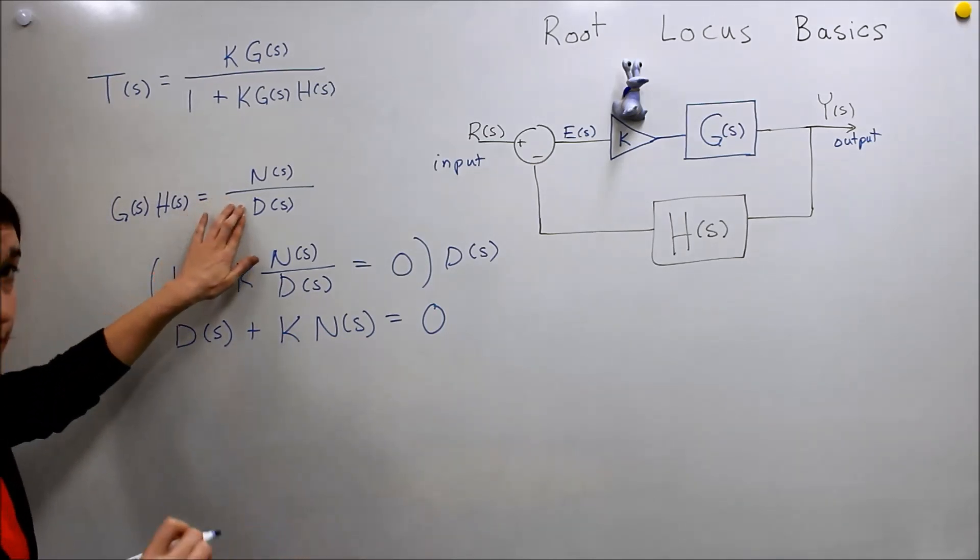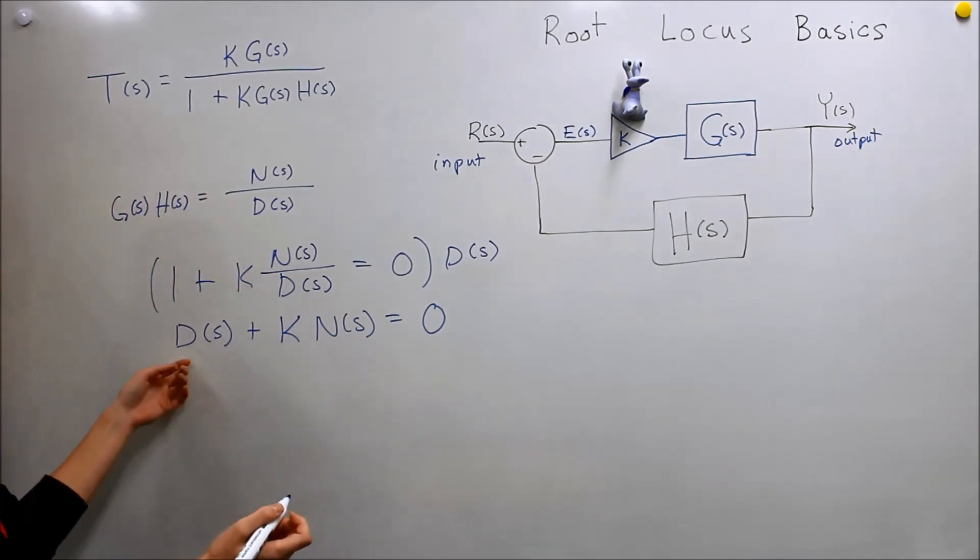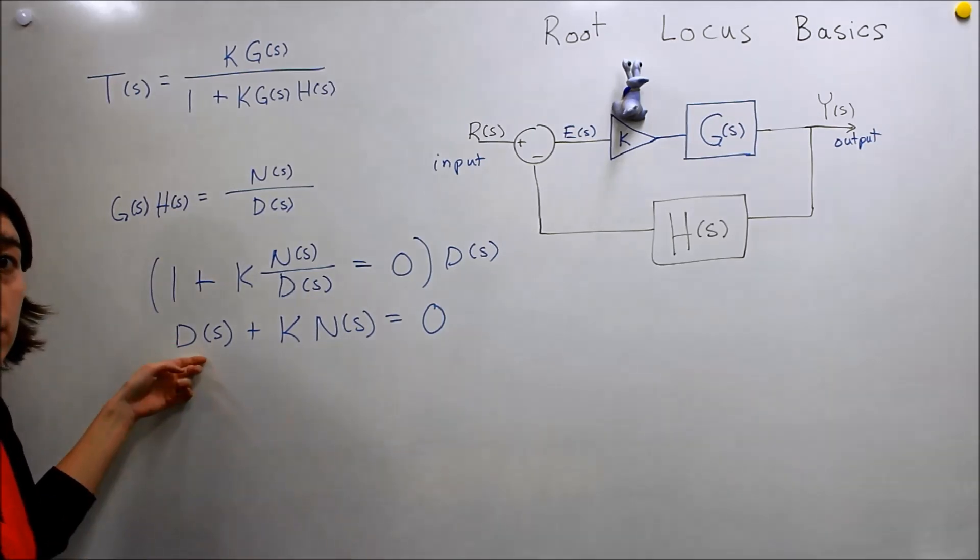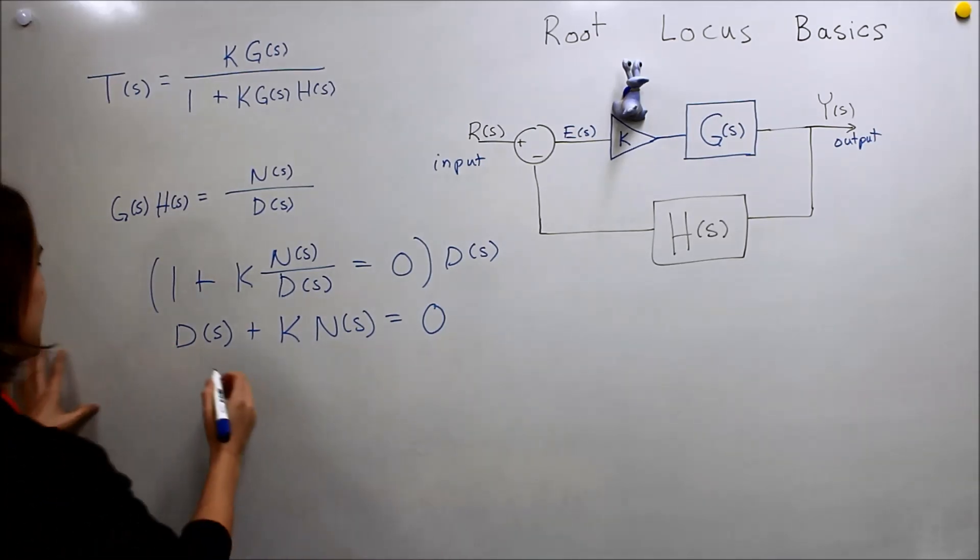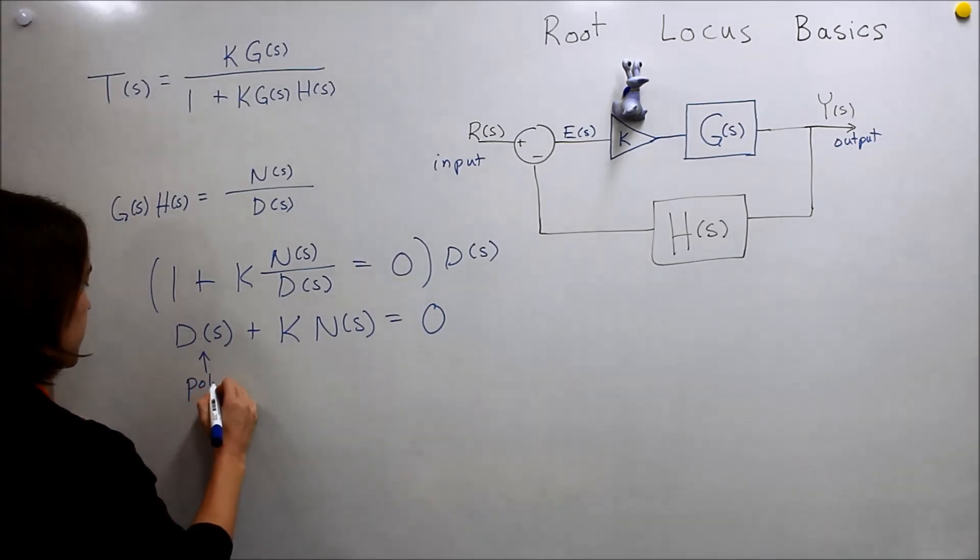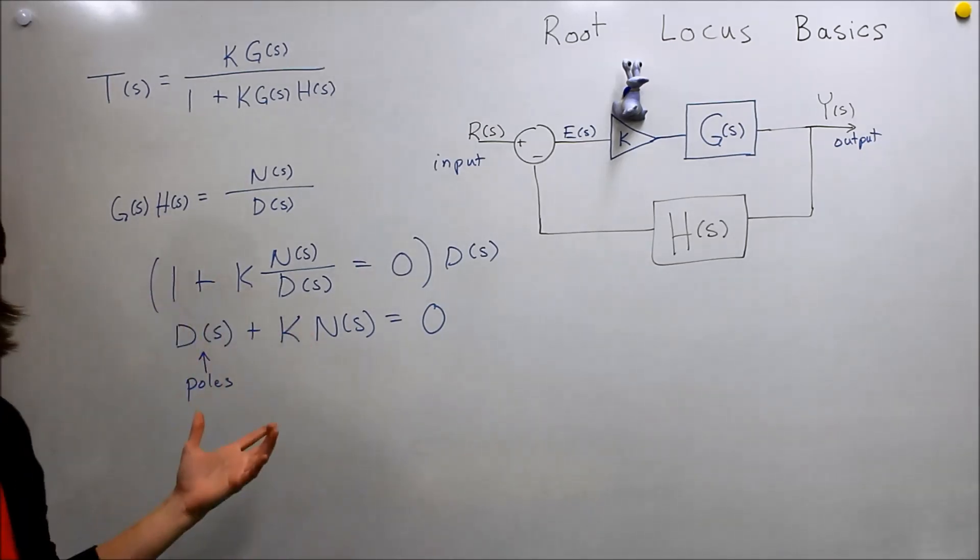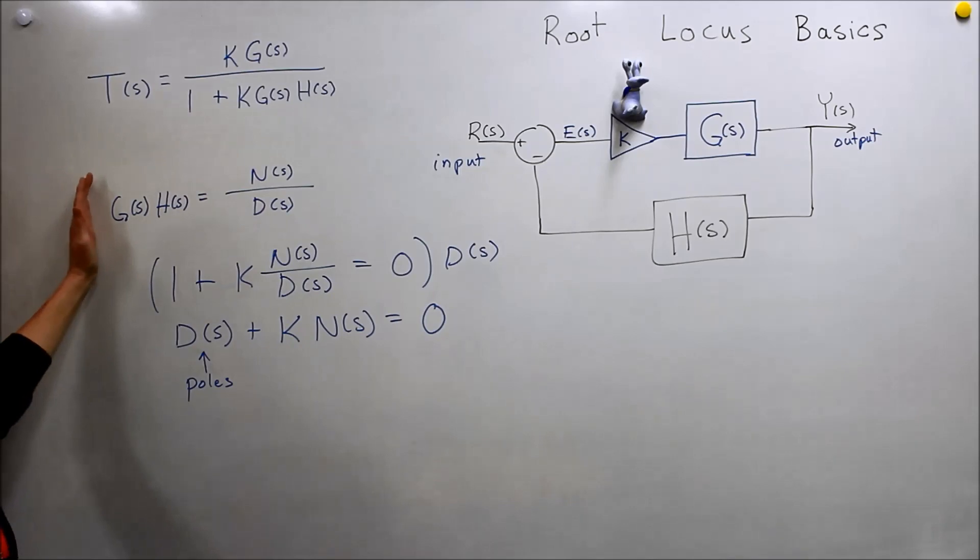Remember our denominator here, these would be the poles of the systems. And the numerator represents the zeros of this system here.